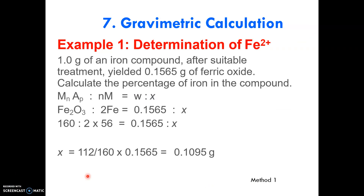Let's go through Example 1 using the chemical factor method. This is a gravimetric determination of iron: one gram of an iron compound after suitable treatment yields 0.1565 grams of ferric oxide (Fe₂O₃). This is your mass of precipitate. To calculate the percentage of iron in the compound, write down the formula using the molar mass of Fe₂O₃.